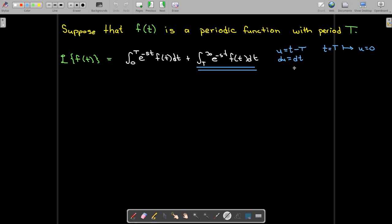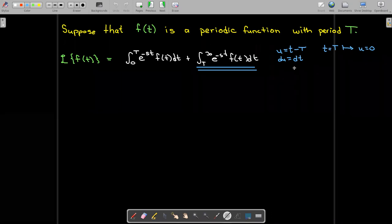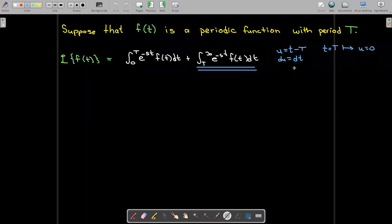as lowercase t goes to infinity, u will also go to infinity, so the upper bound stays infinity. In the lower bound, when t equals uppercase T, u will equal 0.